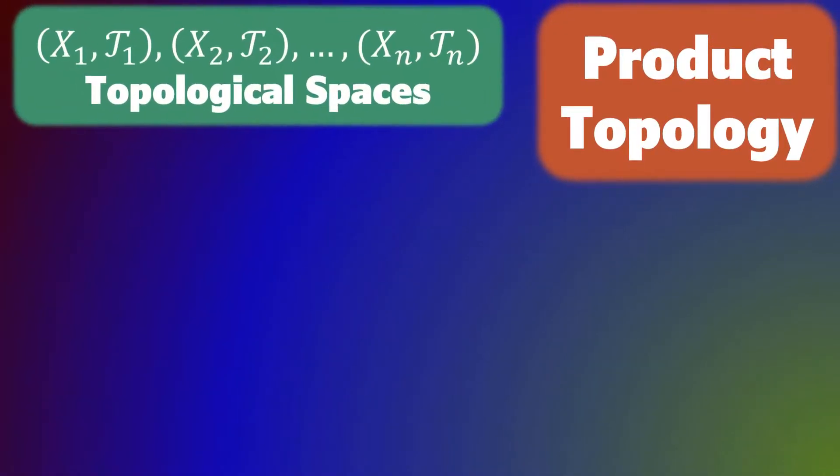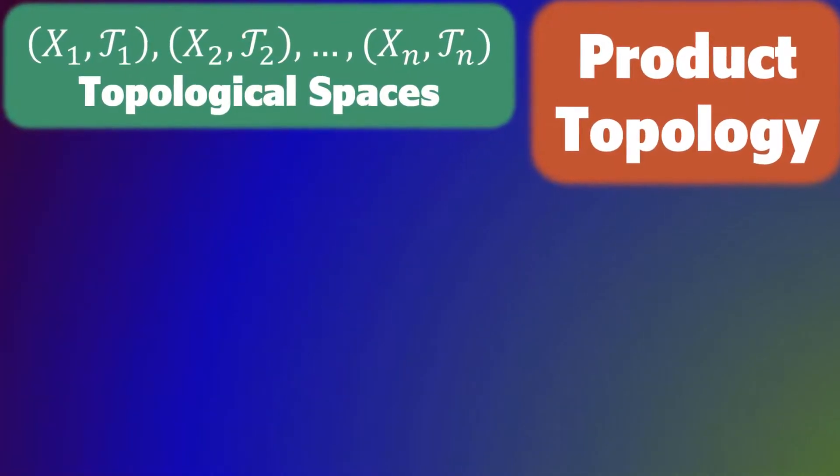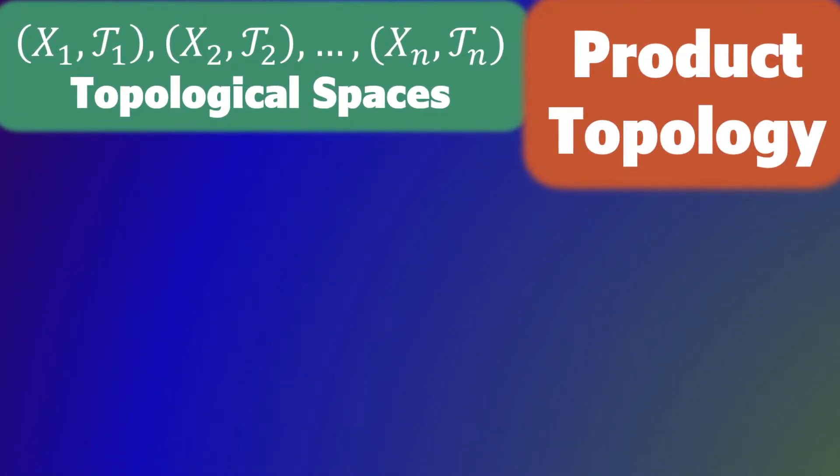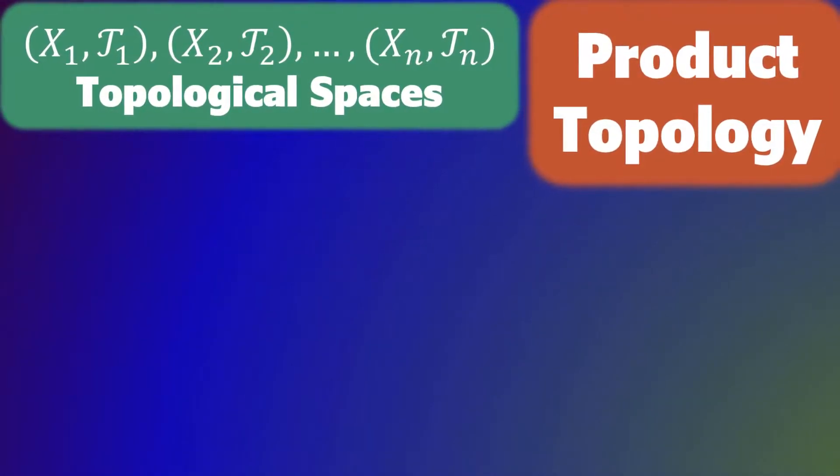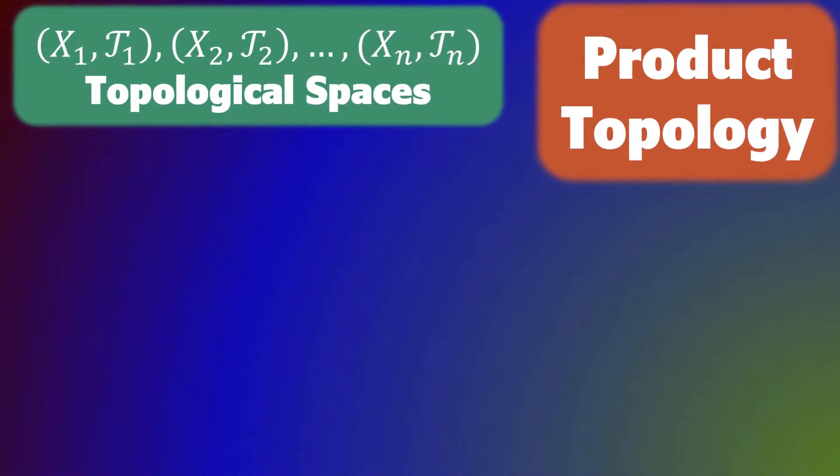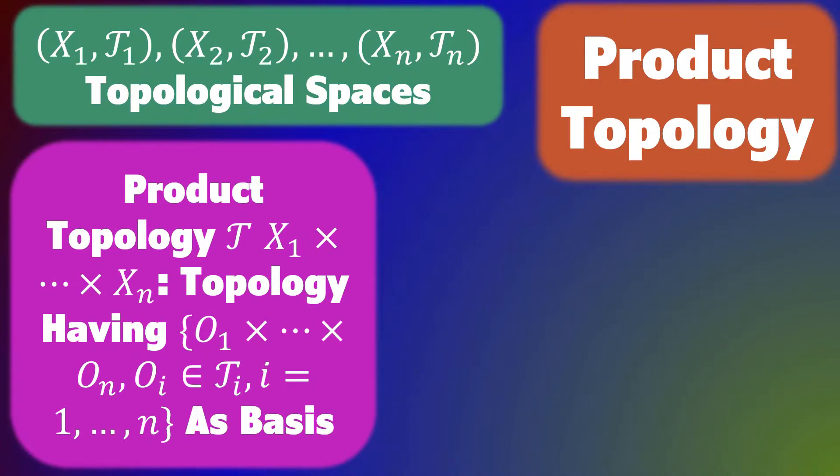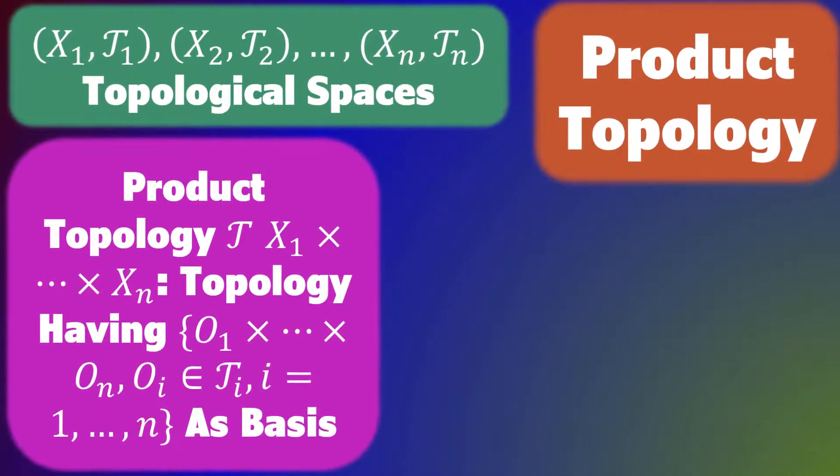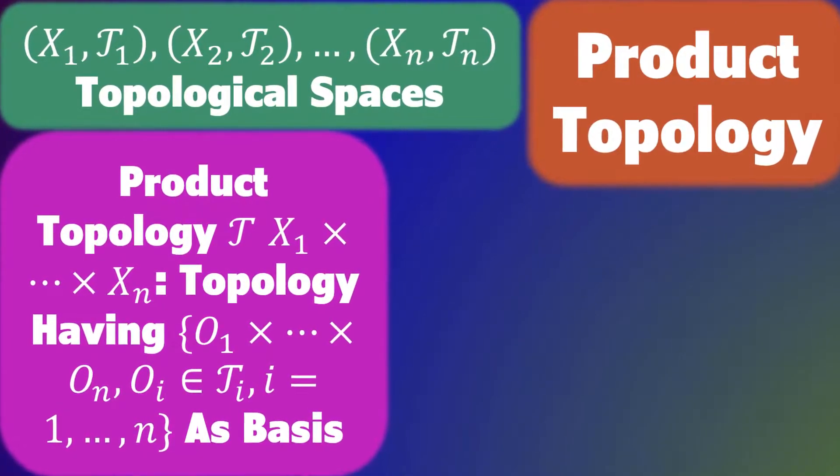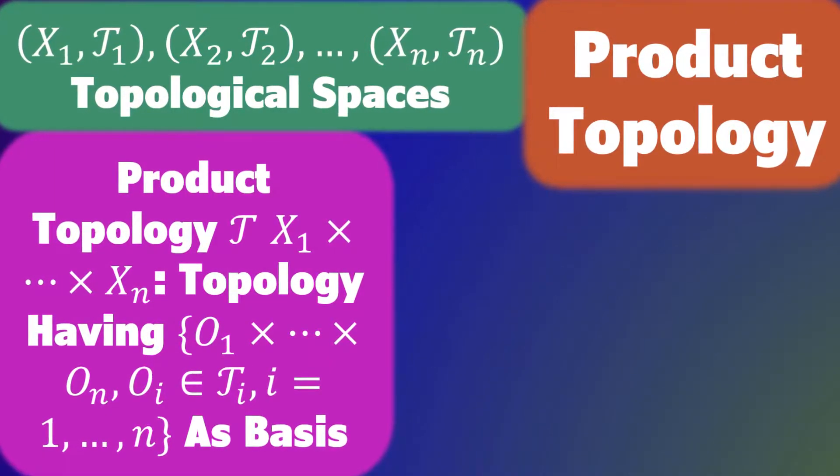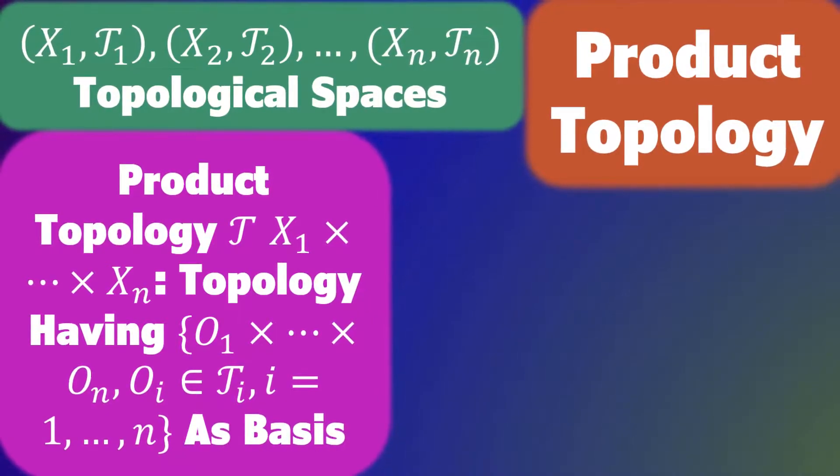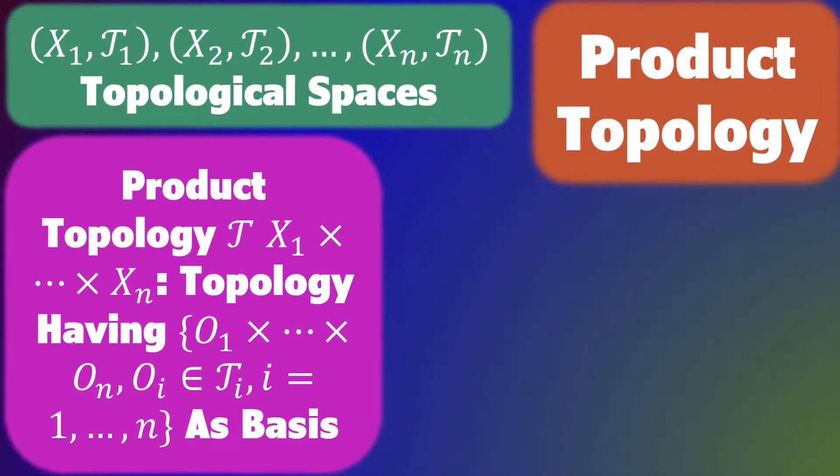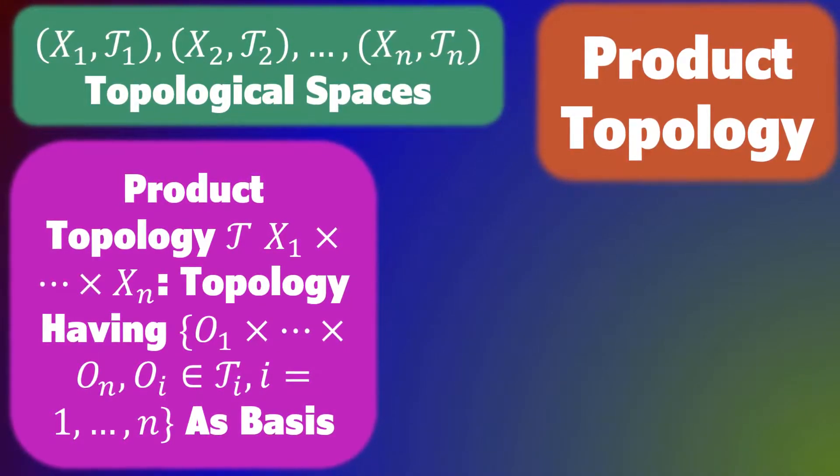Let X₁ with T₁, X₂ with T₂, all the way up to Xₙ with Tₙ be topological spaces. Then, the product topology T on the set X₁ times all the way up to Xₙ is a topology having the family O₁ times all the way up to Oₙ, for Oᵢ in Tᵢ where i ranges from 1 to n, as a basis.